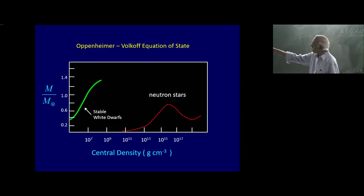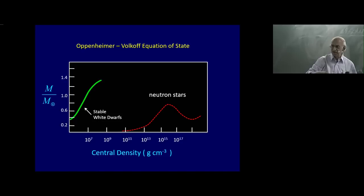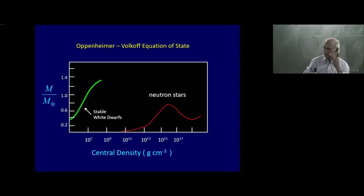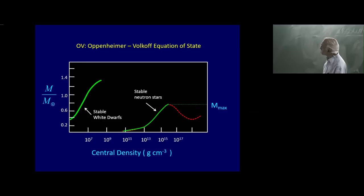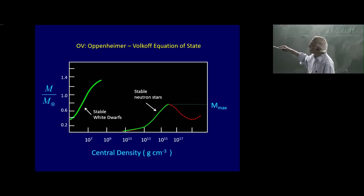Interestingly, the neutron star curve has a maximum and then goes down — there is indeed a minimum. As you go to larger masses, the central density must increase. But to the right of the maximum, as mass decreases, central density also increases — that is not allowed. Therefore the only allowed stable branch of neutron stars is shown in green, where as mass increases, central density increases. This maximum should be identified as the maximum possible mass of the neutron star.